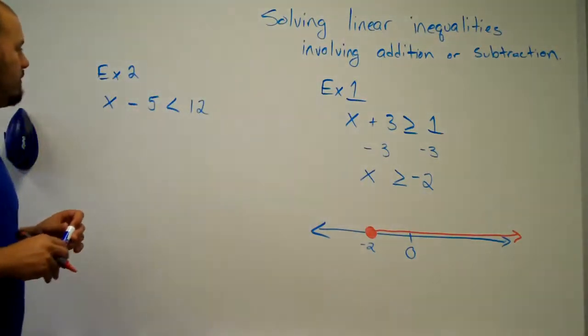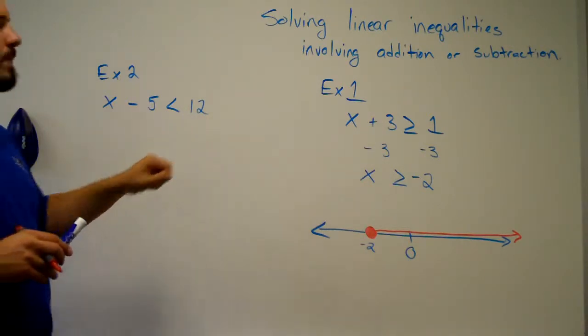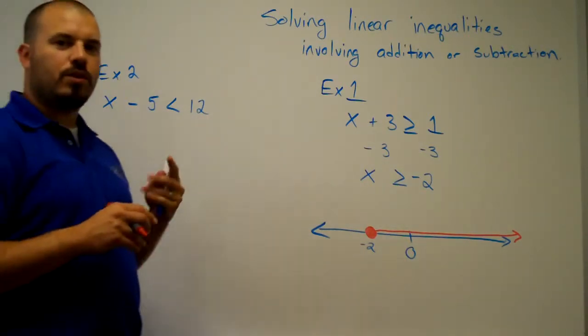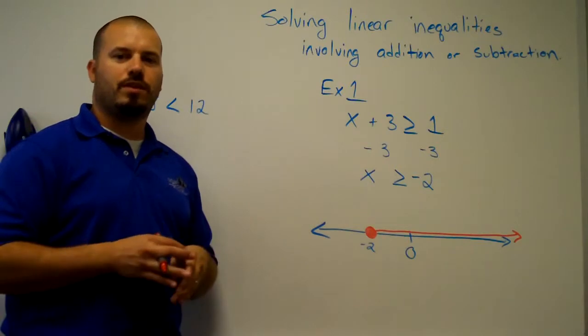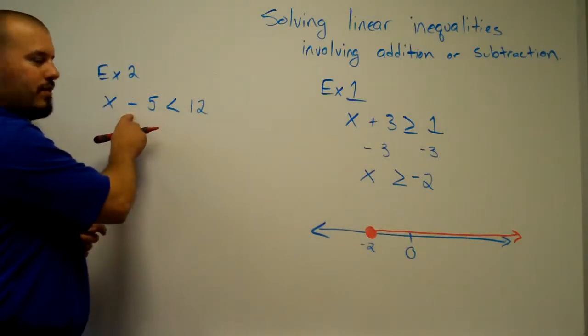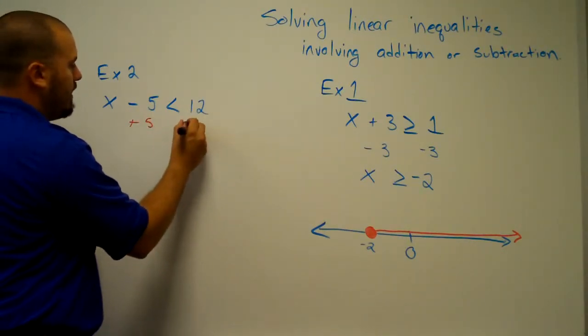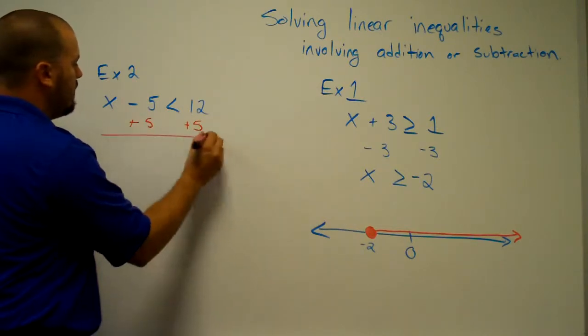In the second example, we have x minus 5 is less than 12. To solve this, again, we're going to work and treat it as if we're working with an equation and solve it that way. So, instead of subtracting 5, the opposite of subtracting 5 is to add 5. Whatever you do to one side of the inequality, you need to do to the other.